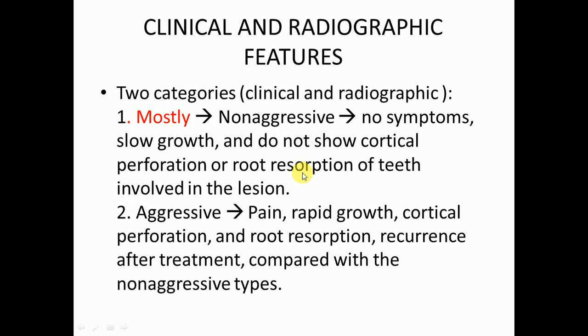There are two categories based on clinical and radiographic features: non-aggressive and aggressive. In non-aggressive cases there will be no symptoms, slow growth, and no cortical perforation or root resorption. In aggressive lesions there will be pain, rapid growth, cortical perforation, root resorption, and a higher rate of recurrence after treatment. Non-aggressive lesions have less chance of recurrence after surgery, while aggressive lesions have more chances of recurrence.